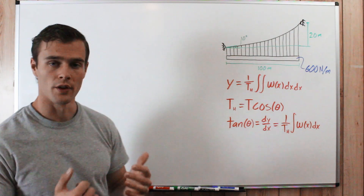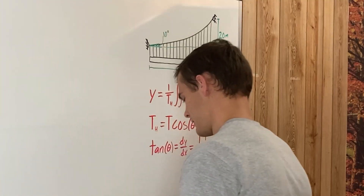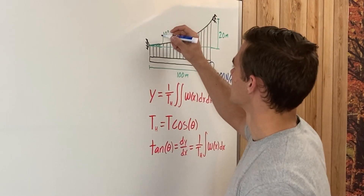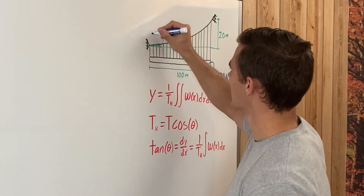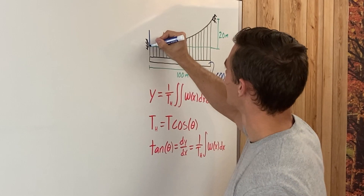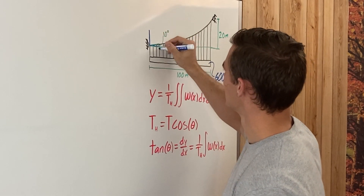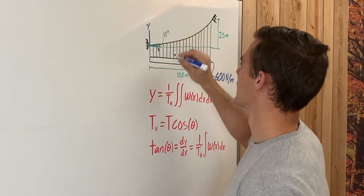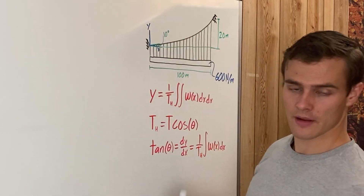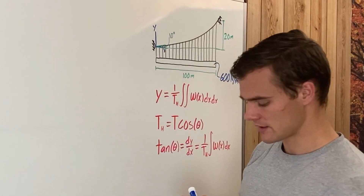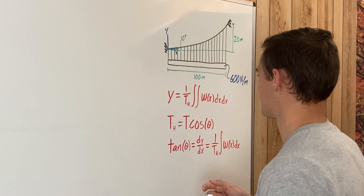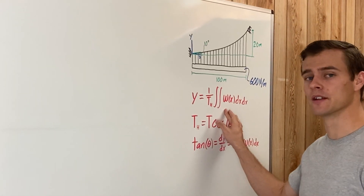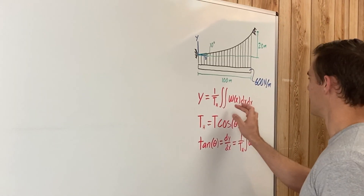First, we label our axis system. The origin is set at the left support connection point — that is (0, 0). The x direction goes horizontally and the y direction goes vertically. This will be important when solving the boundary conditions after we integrate.